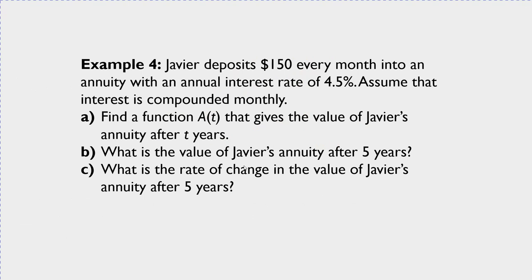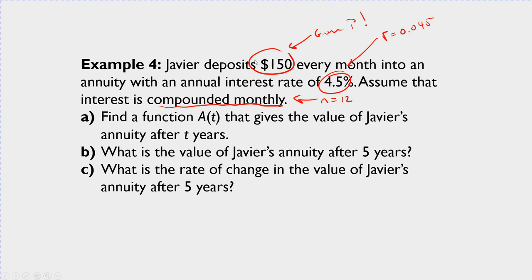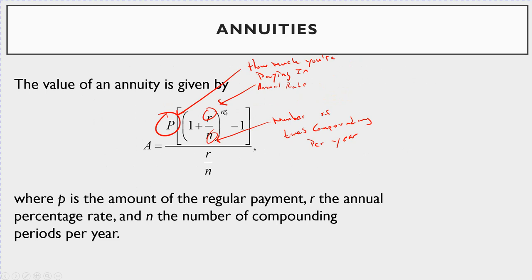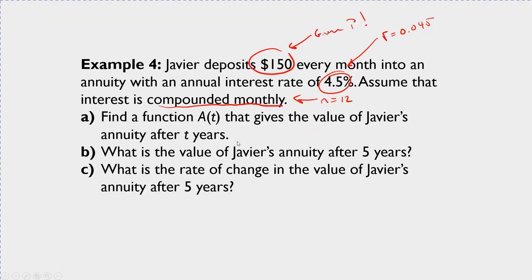Here's the problem: Javier deposits $150 every month — so P = 150 — into an annuity with an annual interest rate of 4.5%, so R = 0.045. The interest is compounded monthly, so N = 12. Find a function A(T) giving the value of Javier's annuity after T years, find its value after five years, and find the rate of change after five years.